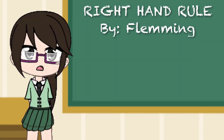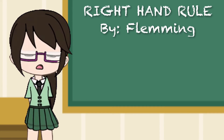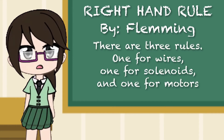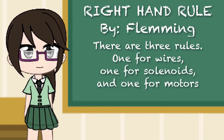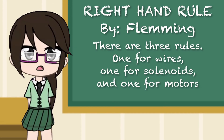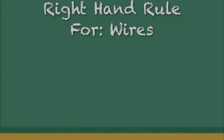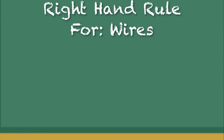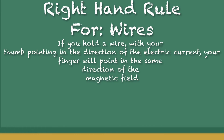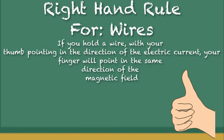Right-hand rule by Fleming. There are three rules: one for wires, one for solenoid, and one for motors. Right-hand rule for wire: if you hold a wire with your thumb pointing in the same direction as the electric current, your fingers will point in the same direction as the magnetic field.